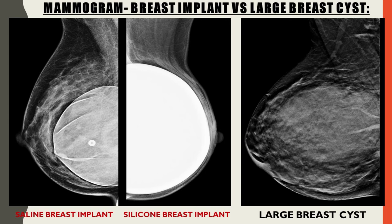Compared to a silicone implant, the silicone implant is bright white, much brighter than a cyst. When compared to a saline implant, the saline implant is more radiolucent than the silicone breast implants. It's translucent and you can see the valves and the folds through the implant. Compared to the large breast cyst, the saline implant has much more well-defined borders and is a more obvious structure in the breast.